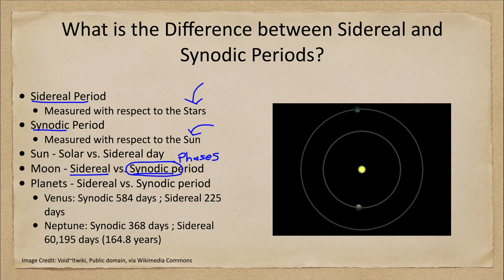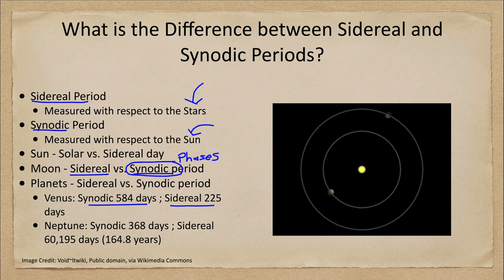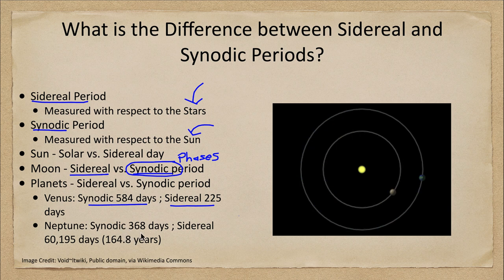So let's take a look at Venus. Venus has a synodic period of 584 days and a sidereal period of 225 days. It takes more than twice as long to get back into the same positioning relative to Earth than it does relative to the sun. For something much farther away such as Neptune, the synodic period is 368 days, and the sidereal period is over 60,000 days — nearly 165 years.